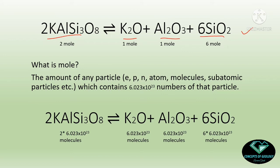What is a mole? The amount of any particle — whether electron, proton, neutron, atom, molecule, or subatomic particle — which contains 6.023 × 10²³ numbers of that particle is called 1 mole of matter. It is a unit of amount. Now concentrate on this reaction: we have 2 moles of KAlSi3O8, 1 mole of K2O, 1 mole of Al2O3, and 6 moles of SiO2.